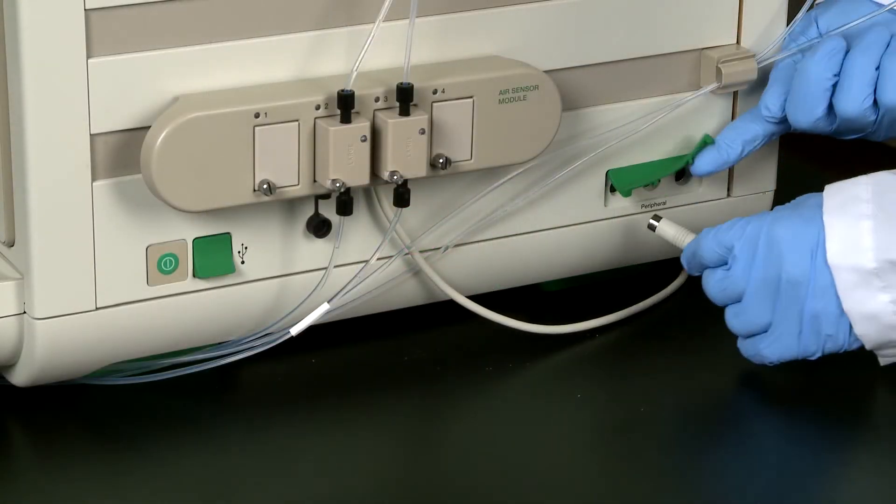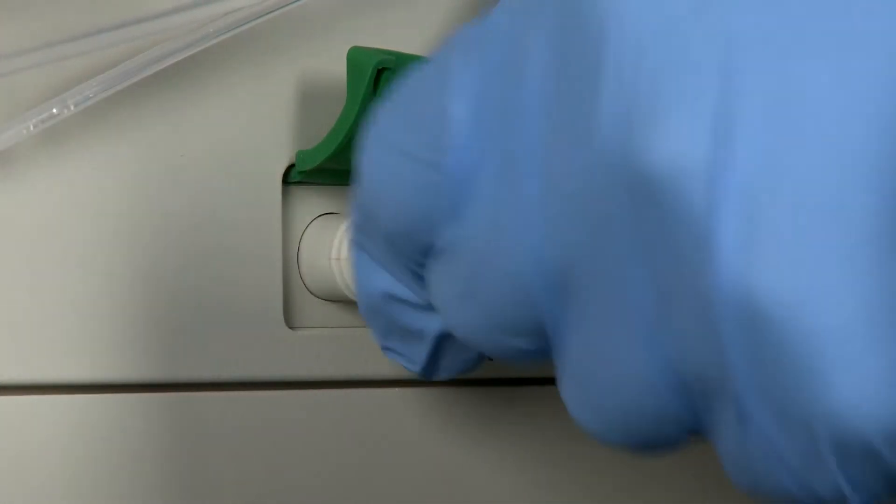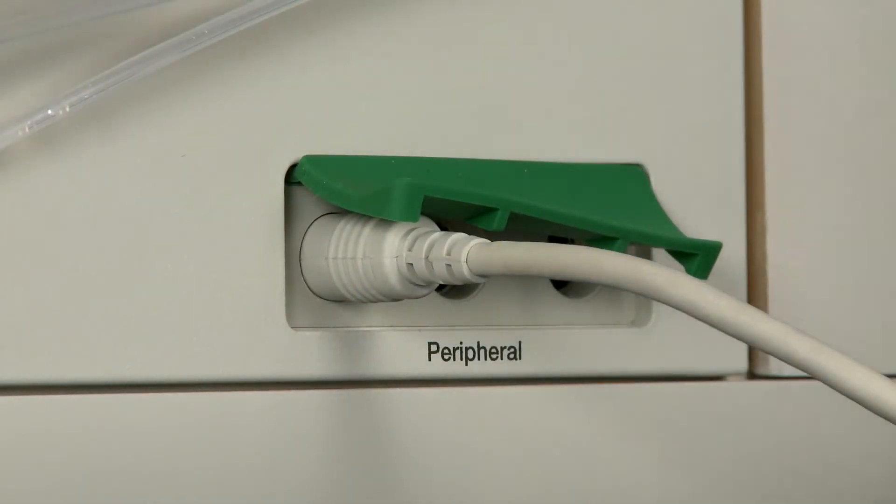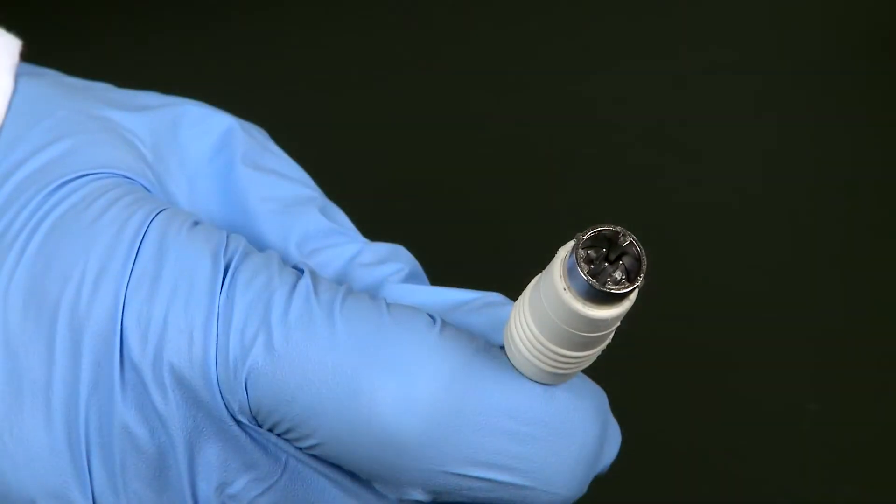Next, attach the air sensor module to one of the peripheral ports located on the side of the instrument using the 9-pin mini DIN plug.